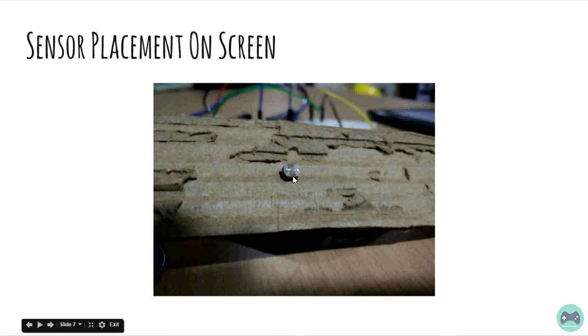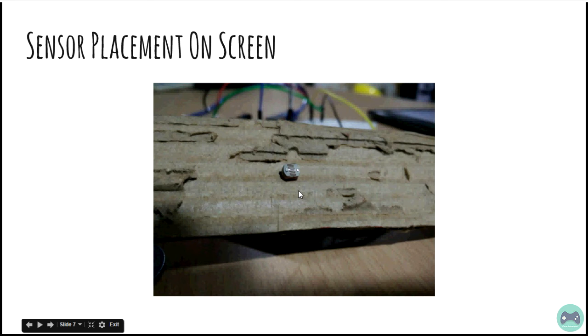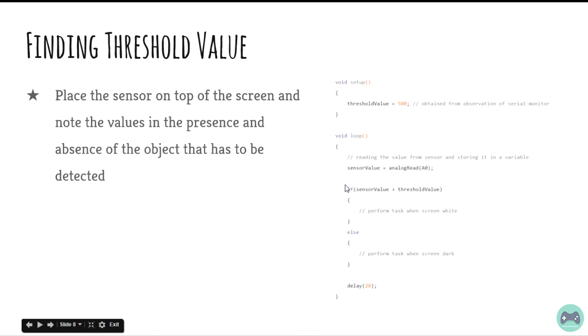While placing the sensor on top of your phone screen, I suggest that you use a cardboard or some kind of dark material so that the ambient light doesn't affect the values on your LDR much.